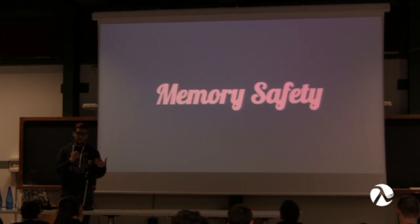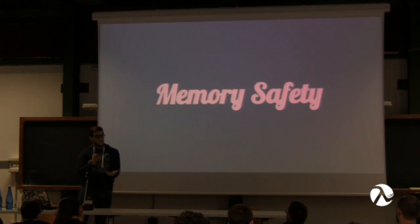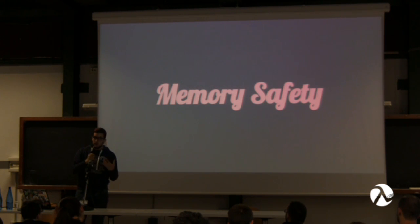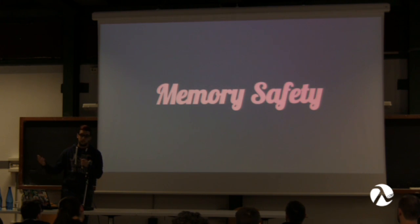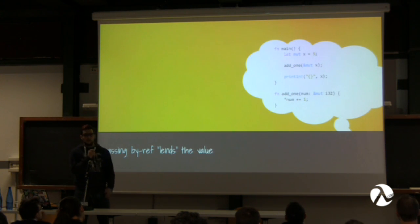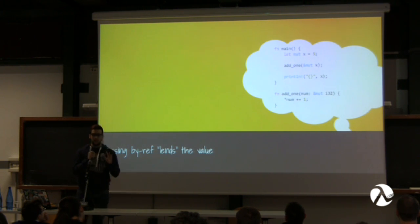Let's start by talking about memory safety. How does the language guarantee memory safety? We'll go from memory safety to why it's important, then talk about lifetimes and why they matter, the aliasing behind those lifetimes or regions, and that will conclude in type system soundness, which is very important for the language. Passing something by reference just lends the value — this is very important.